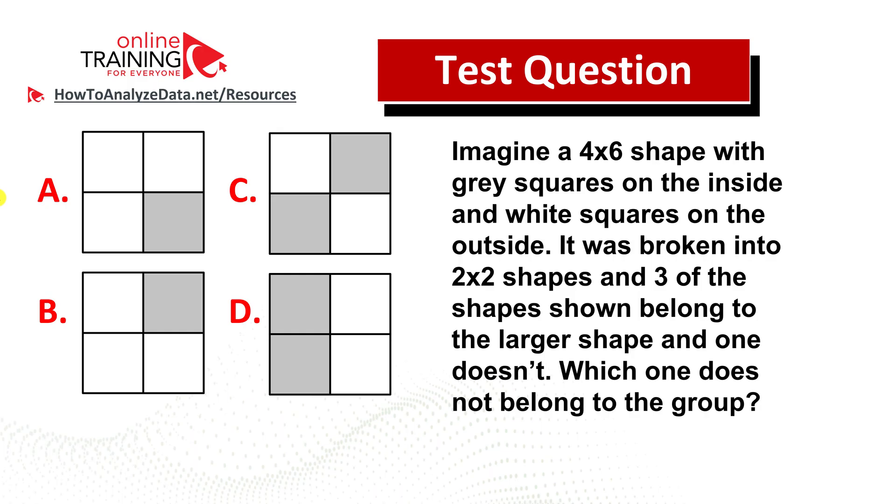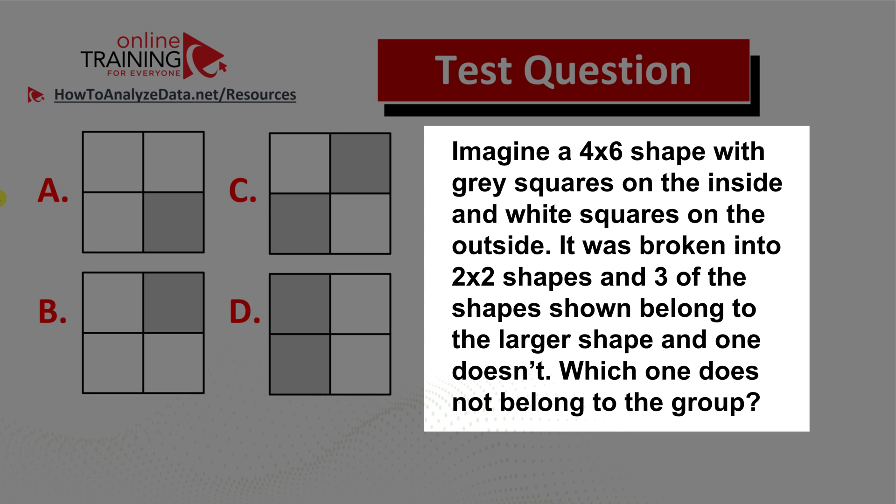Here's a tricky IQ and aptitude test question you might frequently see. Imagine a 4x6 shape with gray squares on the inside and white squares on the outside. It was broken into 2x2 shapes, and three of the shapes shown belong to the larger shape, and one doesn't.